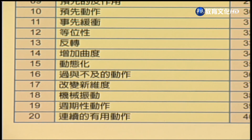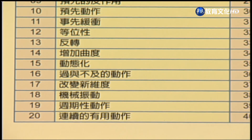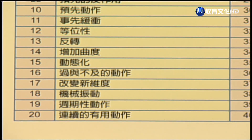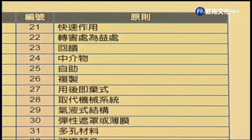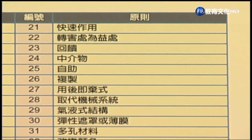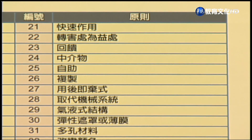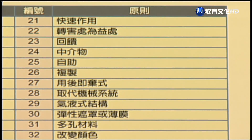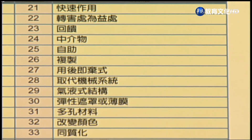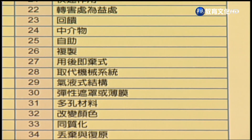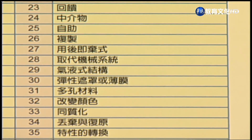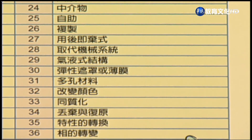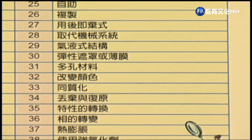续：16.过于不及的动作、17.改变心维度、18.机械振动、19.周期性动作、20.连续的有用动作、21.快速作用、22.转害处为益处、23.回馈、24.中介物、25.自主、26.复制、27.用后及弃、28.取代机械系统、29.气意式结构、30.弹性遮罩或薄膜、31.多孔材料。